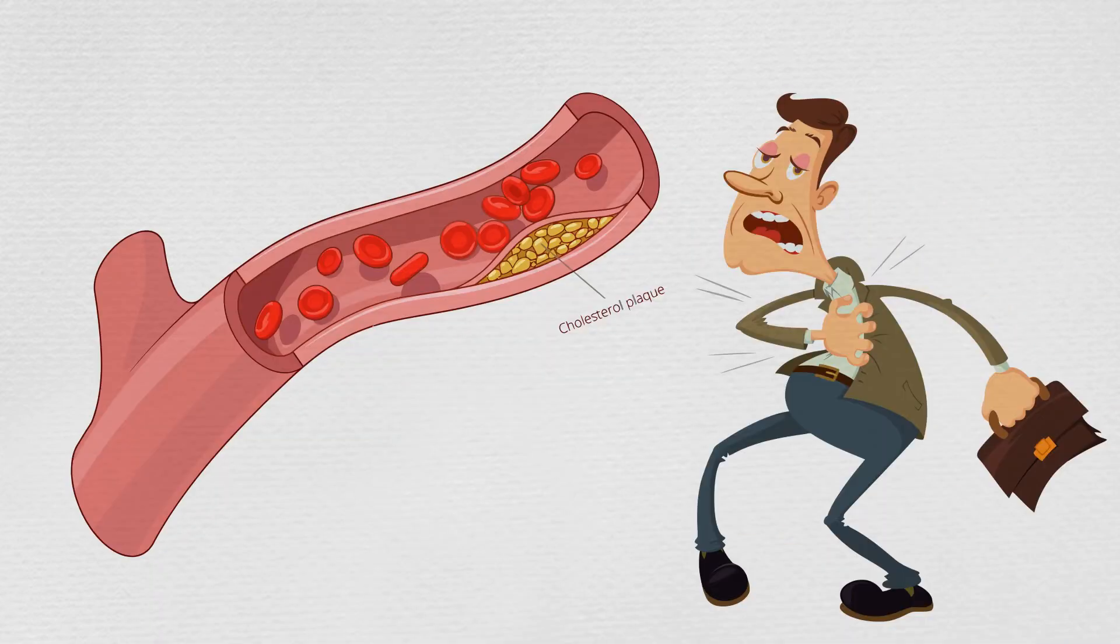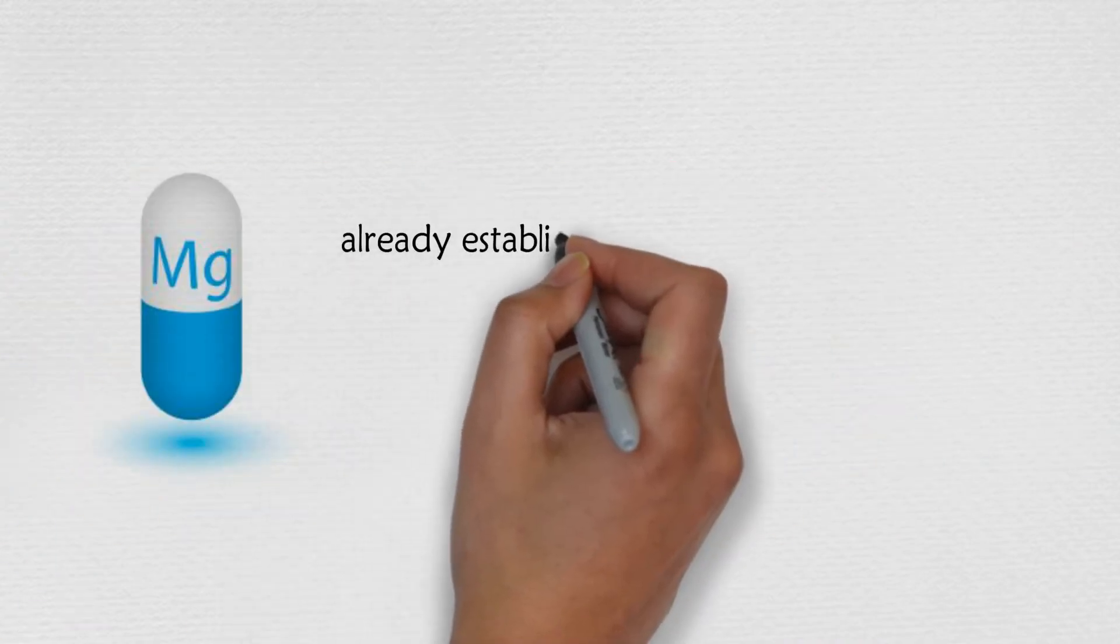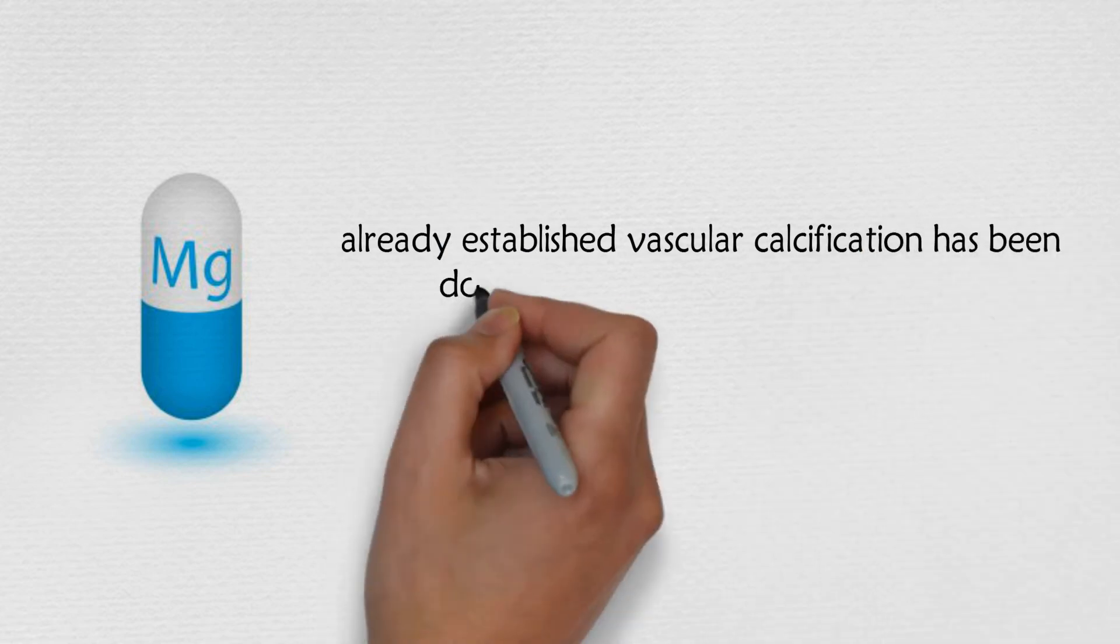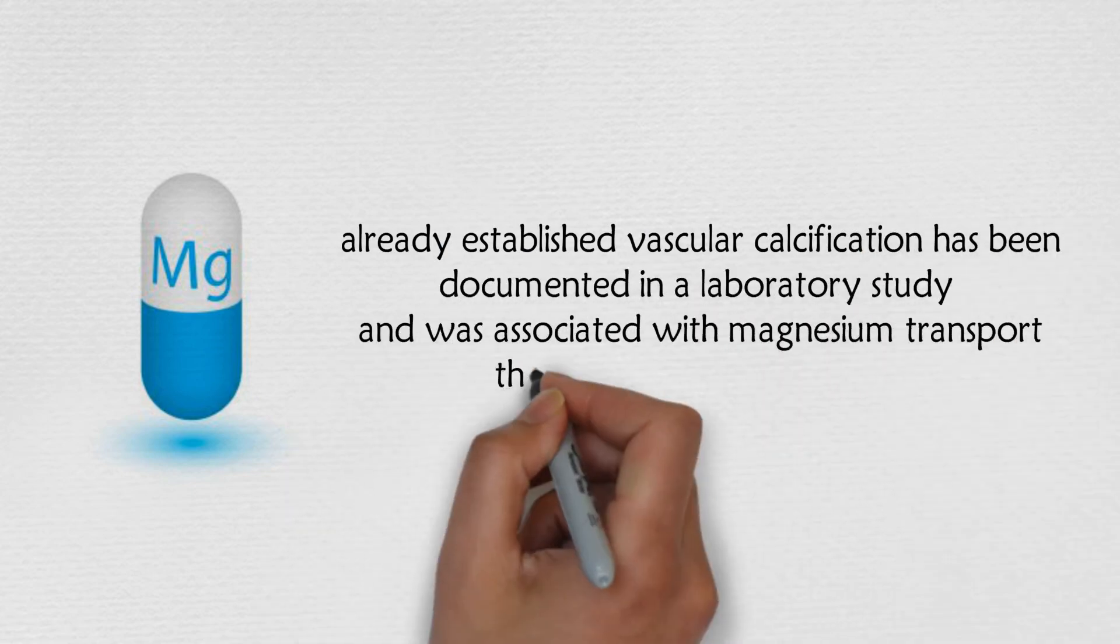So there is even more to the beneficial effects of magnesium than this research can explain. Magnesium's ability to stop already established vascular calcification has been documented in laboratory studies and was associated with magnesium transport through the cell membrane.